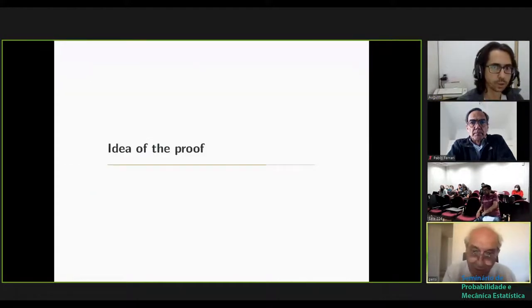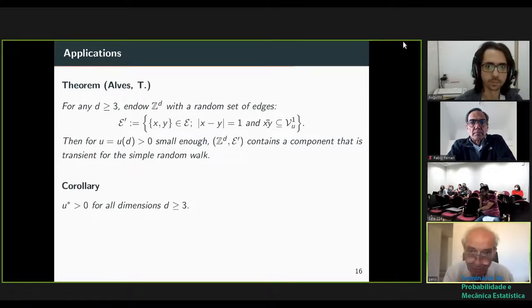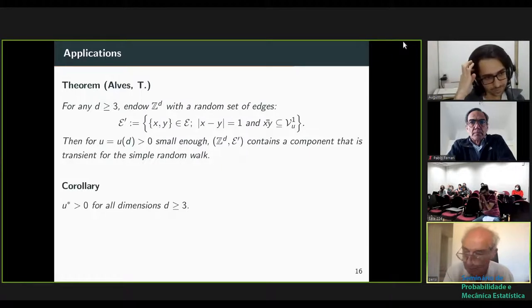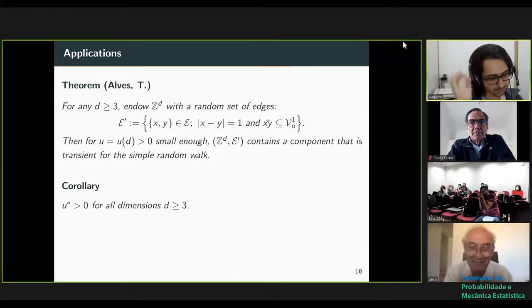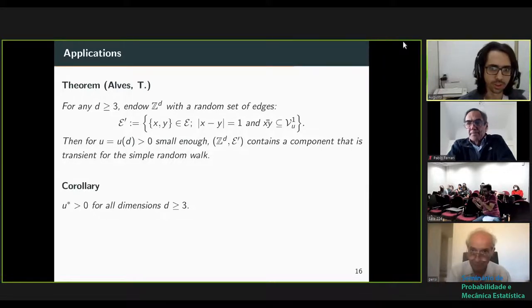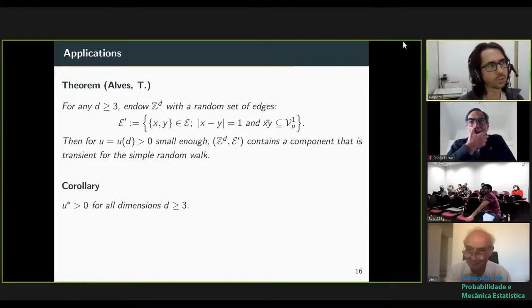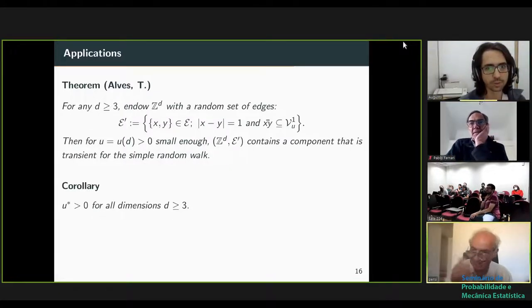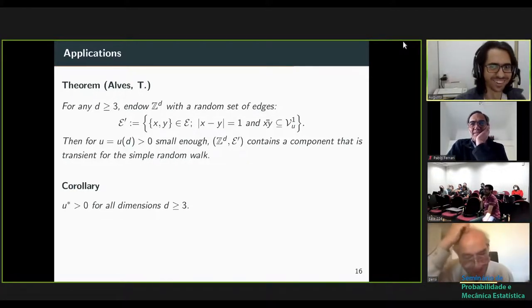Question: Does anybody ever say anything about u-star? It's a big deal in ordinary percolation and you've been silent about it. Yeah, the bounds are usually so terrible people don't talk about them out of embarrassment. You don't prove that u-star is positive; you prove it's bigger than something like 5000 to the minus 5000.